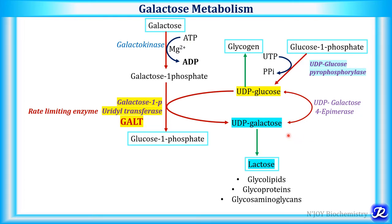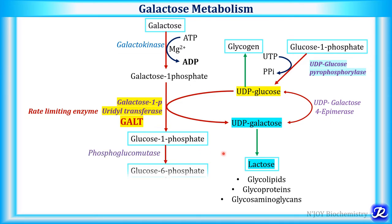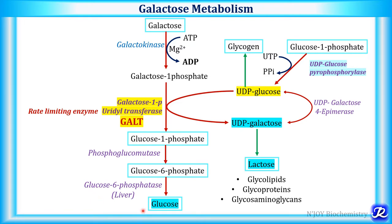The UDP galactose formed in galactose metabolism is further utilized for synthesis of lactose, glycolipids, glycoproteins, and glycosaminoglycans. The glucose 1-phosphate formed is converted to glucose 6-phosphate by phosphoglucomutase, and further by glucose 6-phosphatase to glucose — that is how galactose is converted into glucose in the liver. Glucose 6-phosphate can also enter glycolysis to form pyruvate.